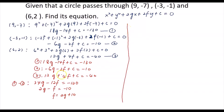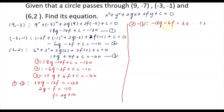Next, form another equation involving g and f by taking Equation 2 minus Equation 3: -6g - 12g = -18g, and -2f - 4f = -6f, with the constant giving 30. So -18g - 6f = 30. Dividing all terms by 3: -6g - 2f = 10. Call this Equation 5.